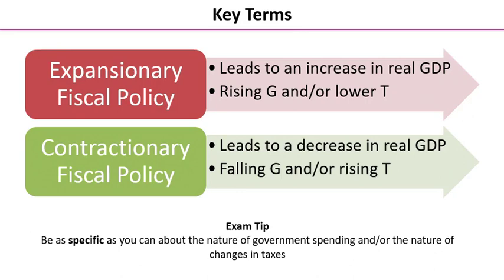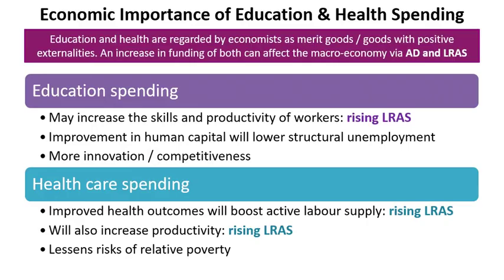My exam tip here is to be as specific as you can about the precise nature of government spending and the nature of changes in taxes. Don't just say 'rising G' or 'falling T' — tell the examiner exactly what type of government spending is changing and exactly which taxes are changing. That allows you to develop your chains of analysis in more depth.